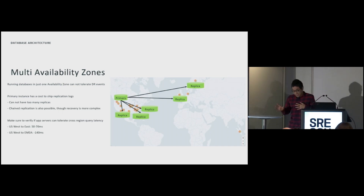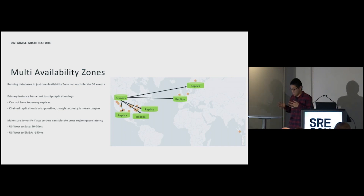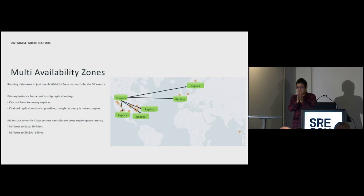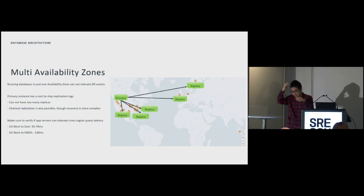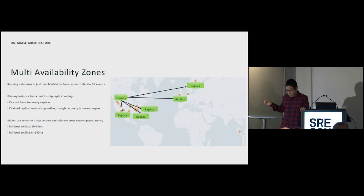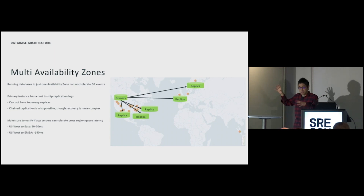This is multi-availability zone architecture. Normally we operate within a single region, but if that region goes offline due to a disaster, we cannot operate. So nowadays many companies operate with redundant replicas across multiple regions — multi-availability zones. In this example, the US has a primary instance with multiple replicas across the West Coast, East Coast, and Europe. This geo-replication is relatively common architecture nowadays.